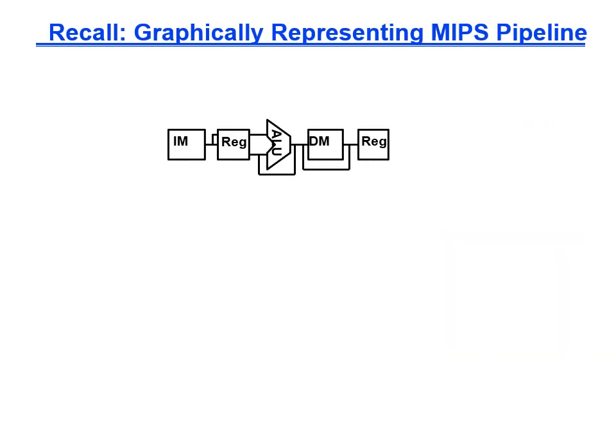We can also represent each stage by the major datapath component used in that stage: the instruction memory, reading the register file, the ALU, the data memory, and writing the register file.